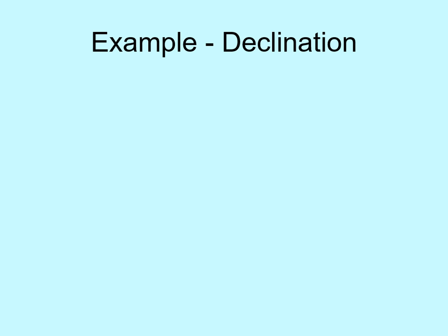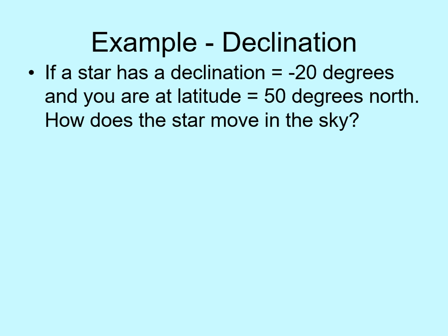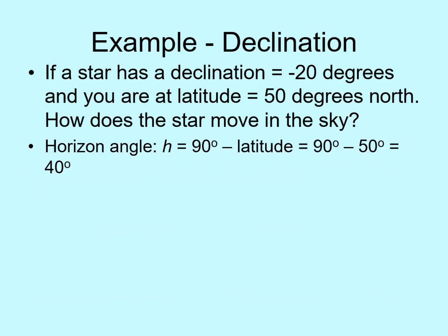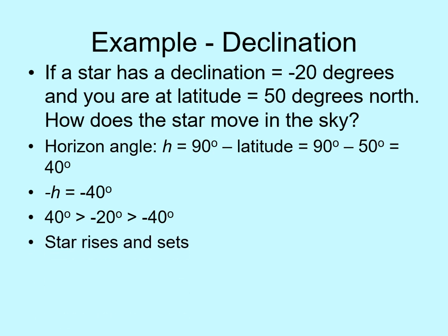Let's look at an example of how we use declination to determine how a star appears to move in our sky. Imagine you want to see a star with a declination of minus 20 degrees, and you're at latitude 50 degrees north. How should the star be moving? Just by looking at the numbers, you can probably guess that this star is not going to be circumpolar, since it's south of the celestial equator and you're in the northern hemisphere. The horizon angle is 90 degrees minus the latitude — in this case, 90 minus 50 is 40 degrees. This means minus the horizon angle is minus 40 degrees. Since the declination of the star, minus 20 degrees, is between h and minus h, this tells us that the star rises and sets. It's neither circumpolar, nor does it stay below our southern horizon.